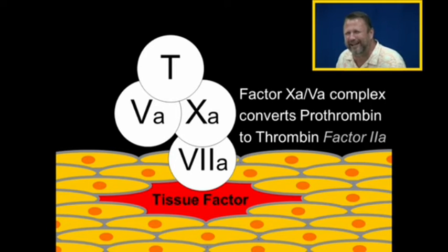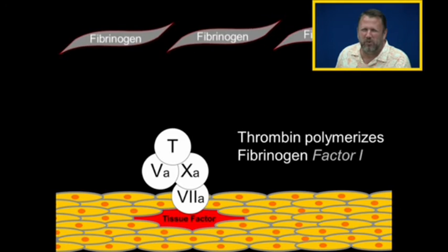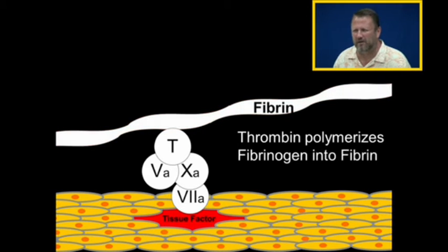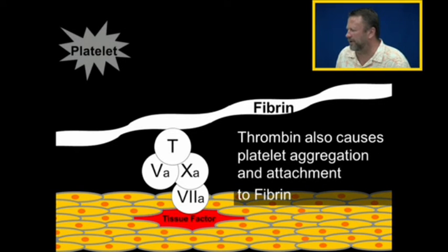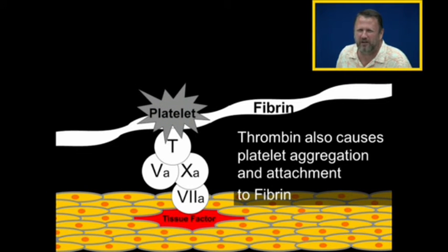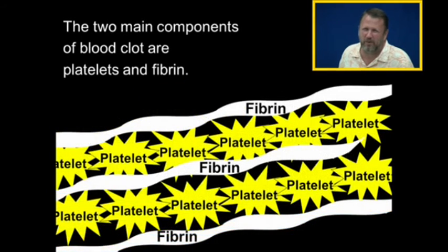Thrombin is very important — it is the most important endpoint of the coagulation cascade. One of the most important things that thrombin does is polymerize to bind together the fibrinogens. Fibrinogen is factor one, and we can take that fibrinogen and make fibrin. Fibrin is one of the most important parts of the thrombus. But thrombin not only causes fibrin formation, it causes platelet aggregation as well, and it causes the platelets to become attached to the fibrin. Platelets and fibrin are the main two components of a blood clot.